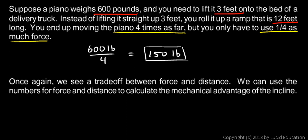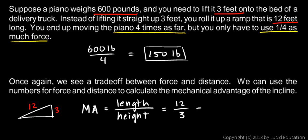We see this trade-off between force and distance. We can use these numbers for the force and distance to calculate a mechanical advantage. We'll use the abbreviation MA for mechanical advantage. The mechanical advantage is the length of the ramp divided by the height that we're lifting the piano. In this case, we pushed it up a ramp that had a length of 12, and it ended up going up a height of 3. So we pushed it 12 feet, but it only actually went up 3 feet. The length over the height ends up being 12 over 3, for a mechanical advantage of this particular ramp of 4.